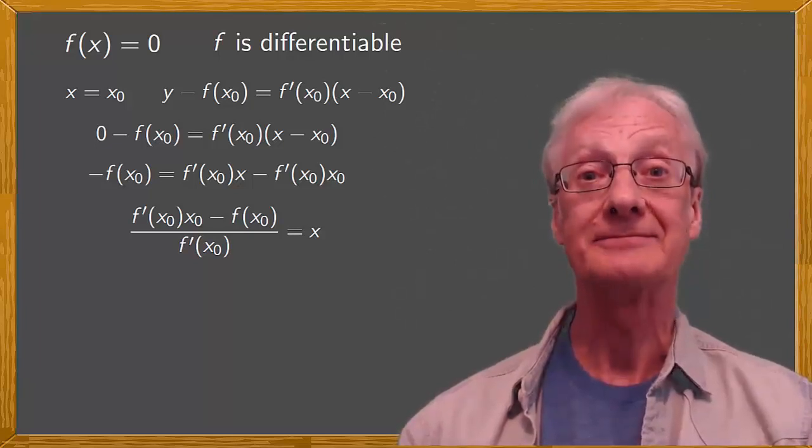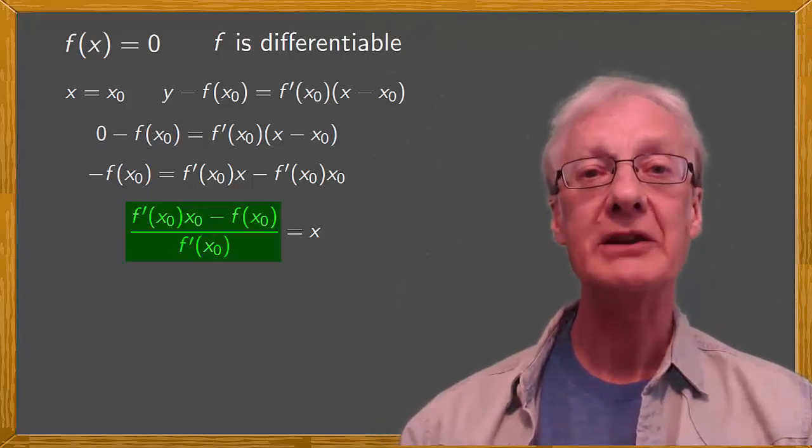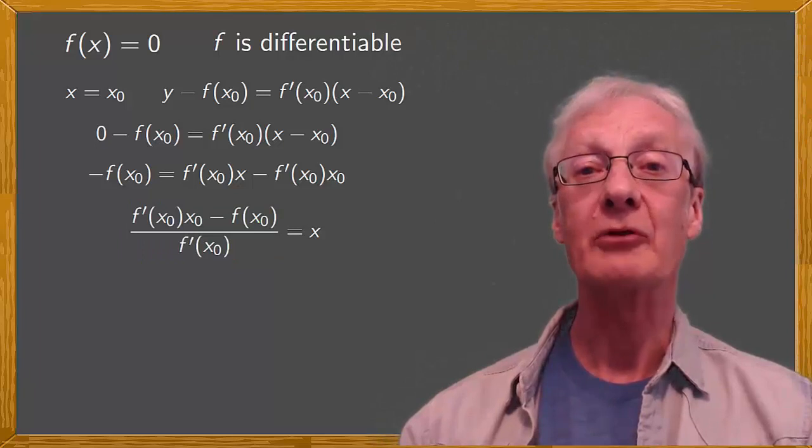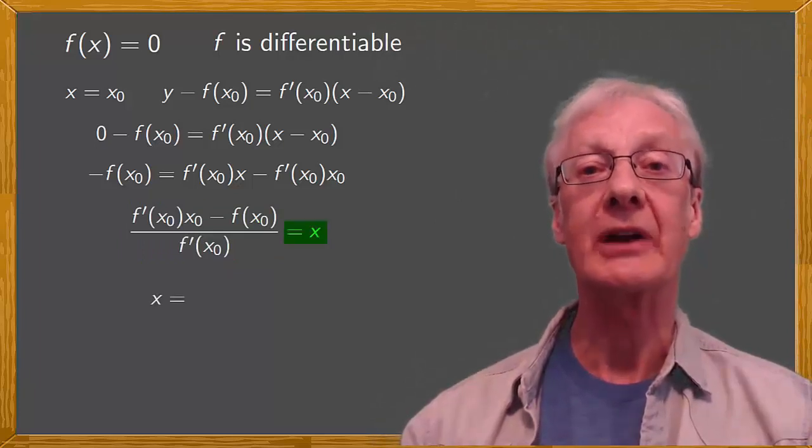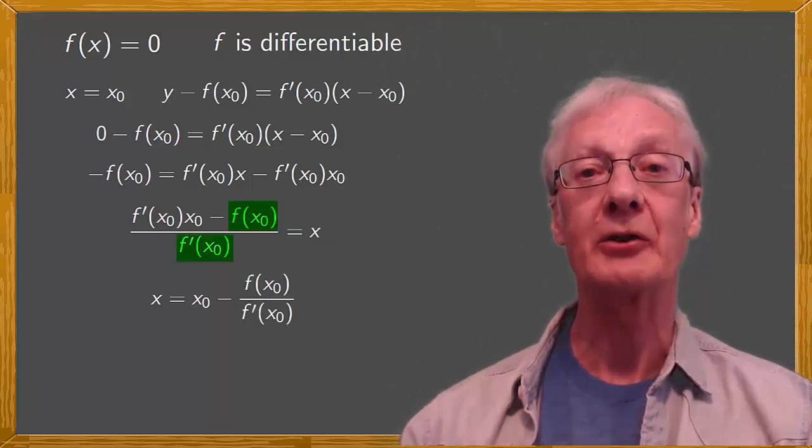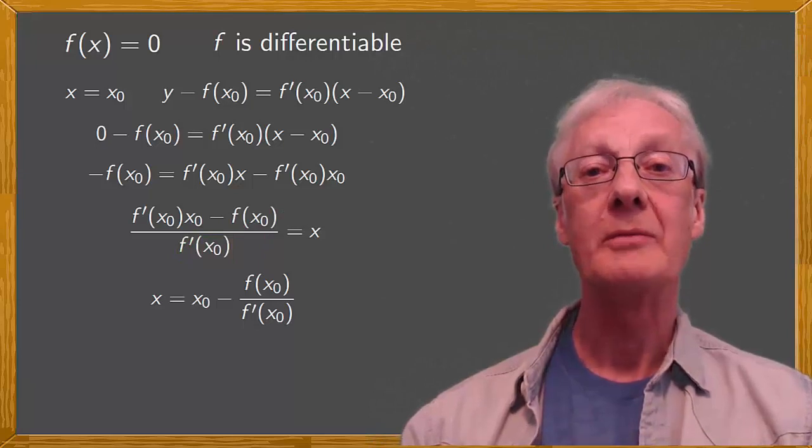Finally, dividing by f prime of x0 and reversing the equality, we end up with x equals x0 minus f of x0 over f prime of x0.